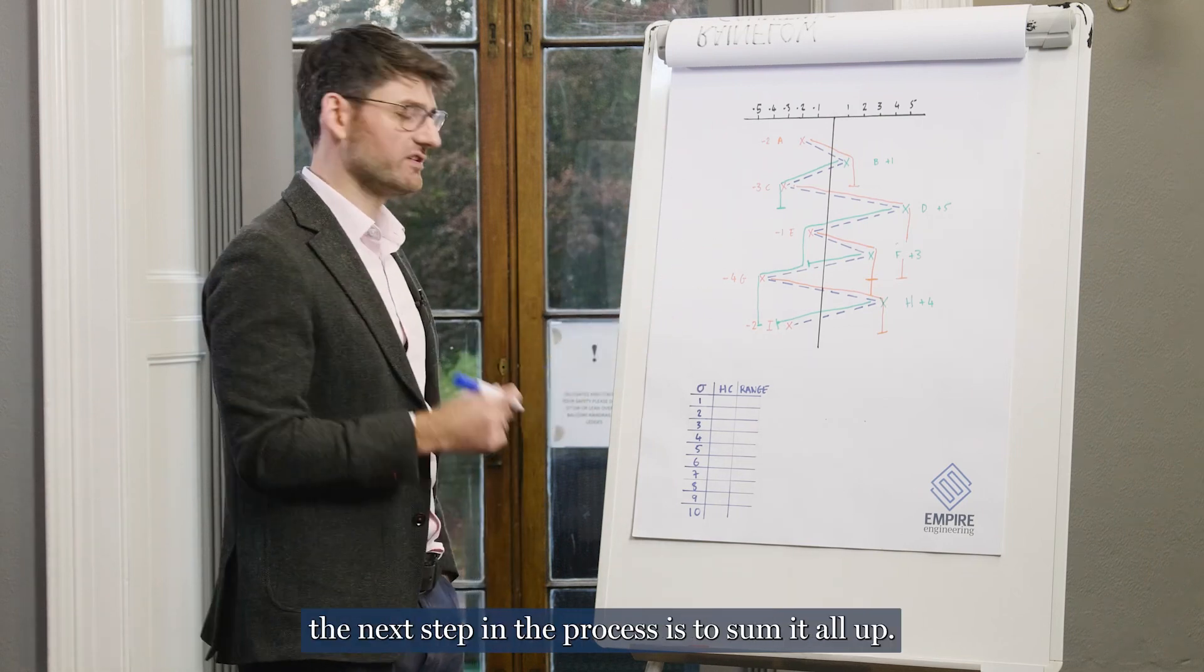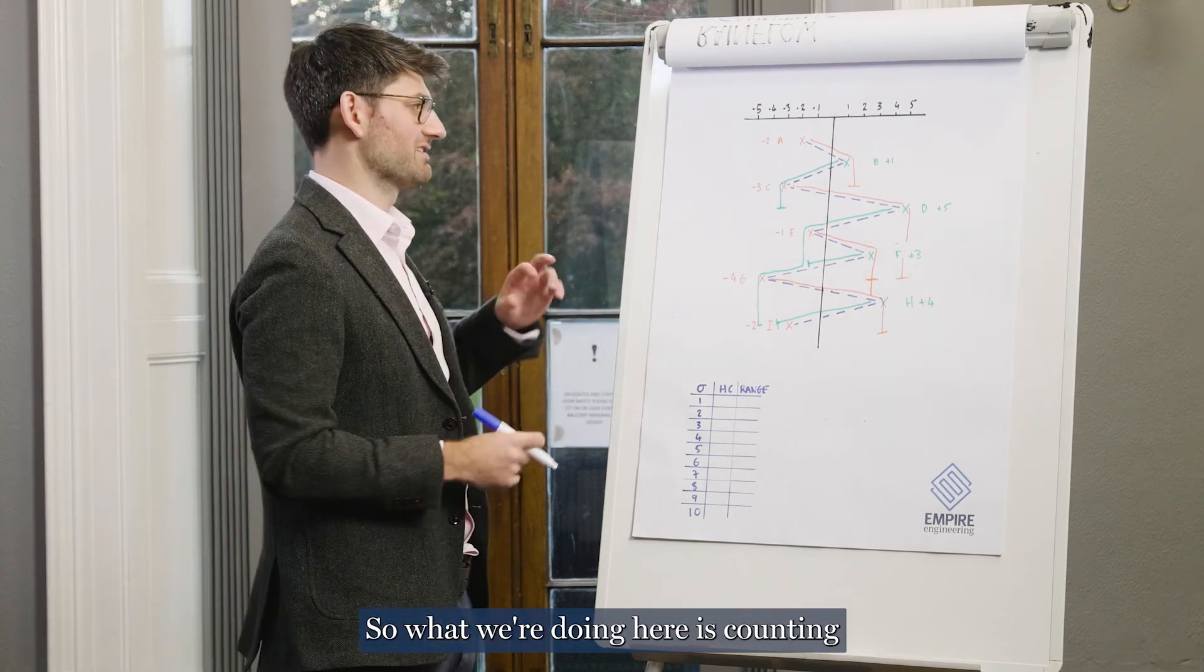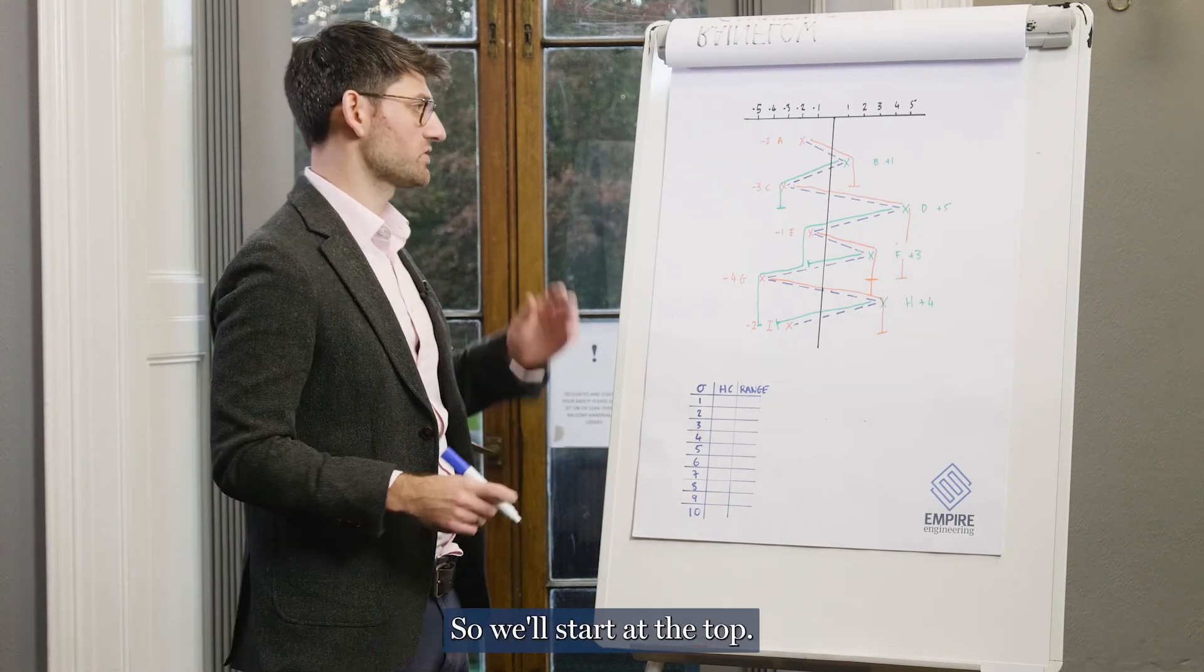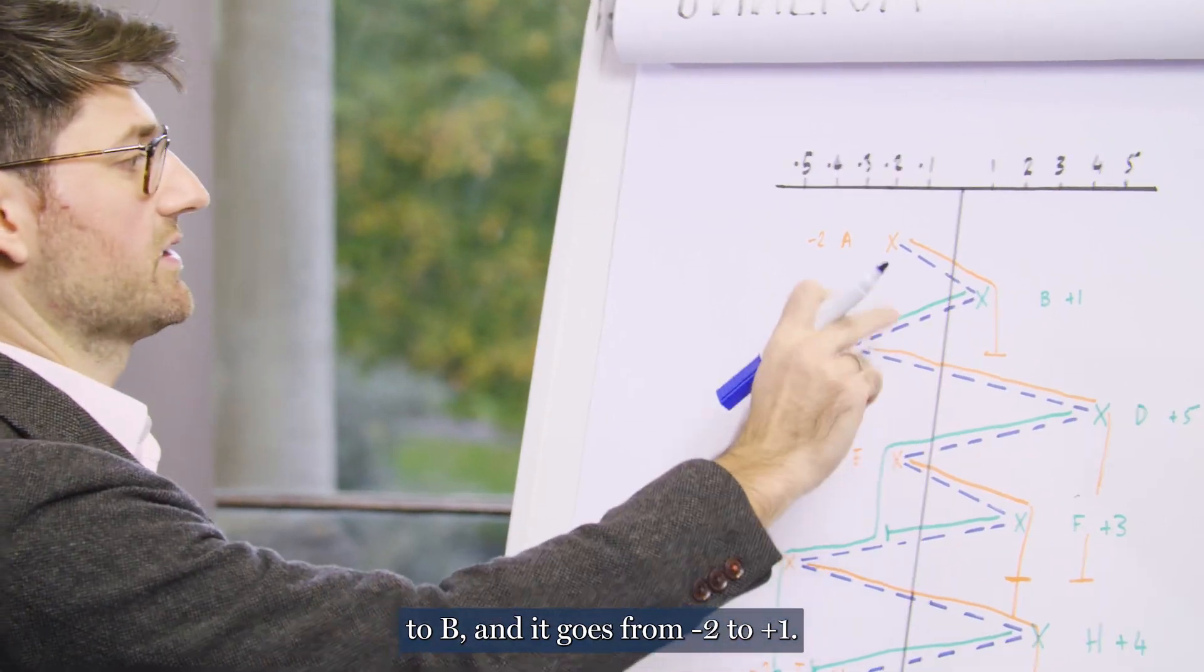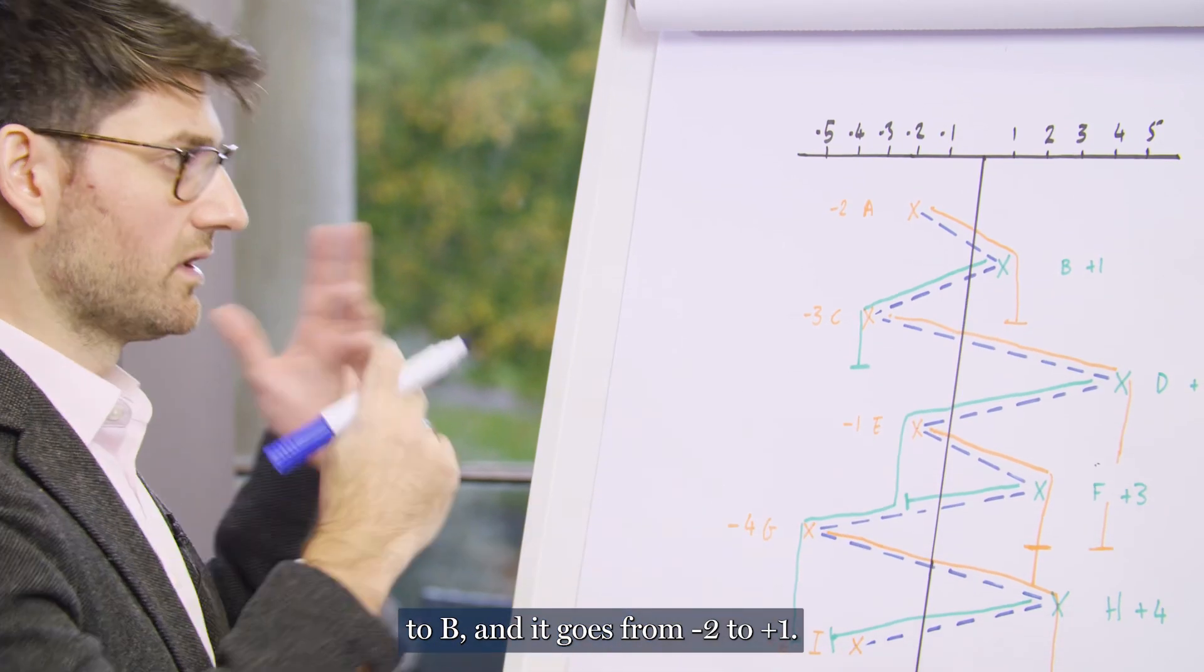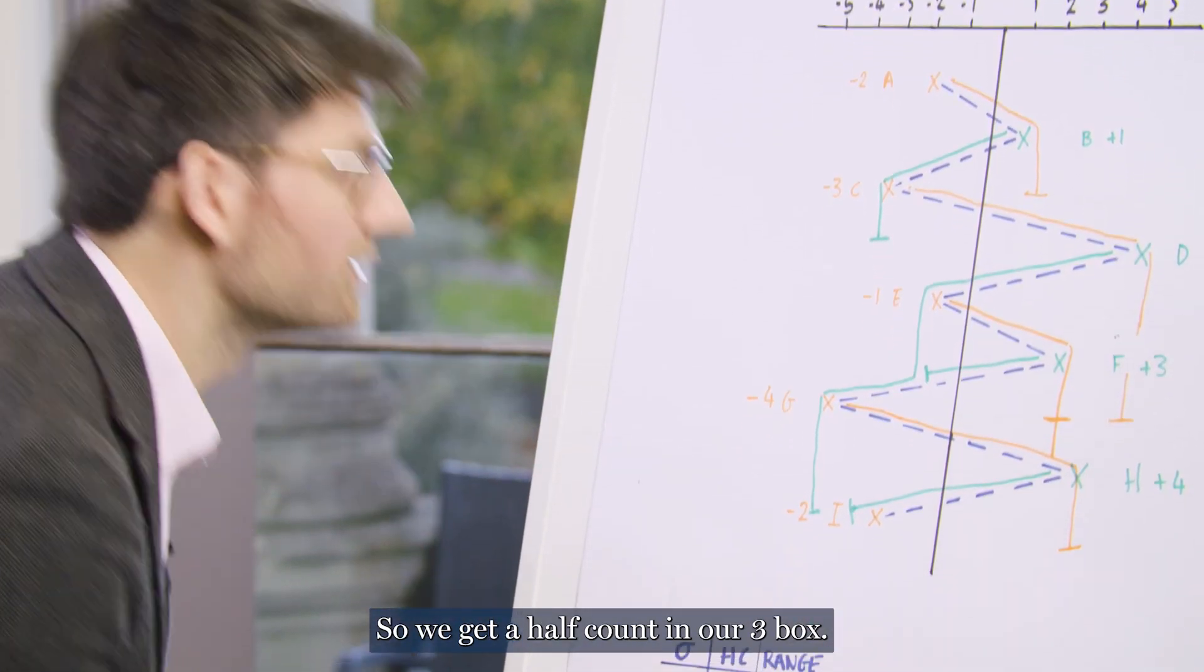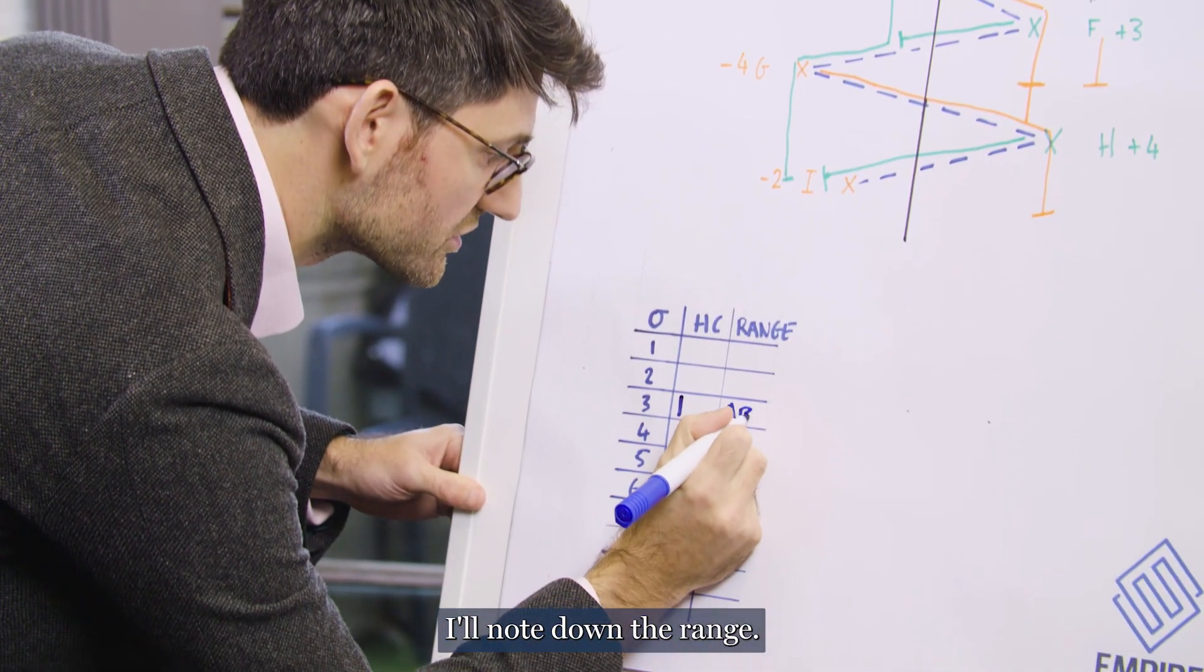Now that we've completed that, the next step in the process is to sum it all up. So what we're doing here is counting what are called half cycles and looking at their stress range. So we'll start at the top. Our first one is A to B and it goes from minus two to plus one, that's a range of three. So we get a half count in our three box and just for good bookkeeping, I'll note down the range A, B.